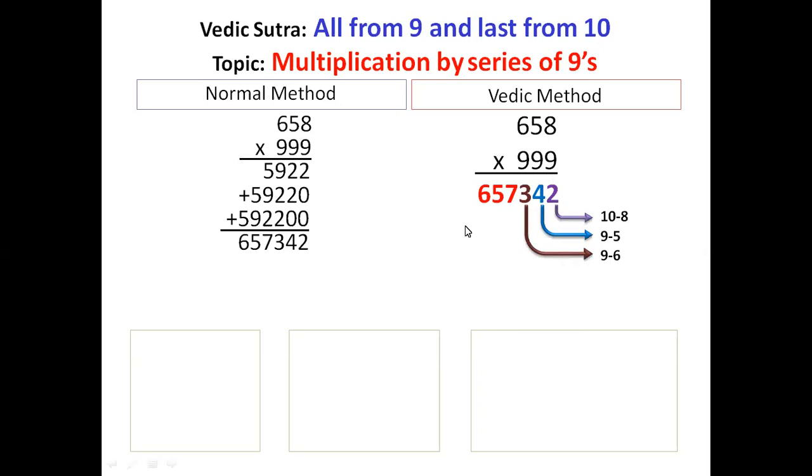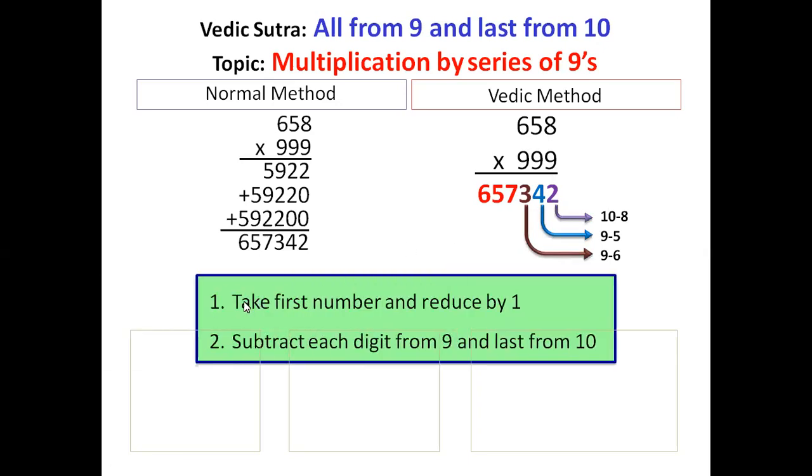Let's go through the steps. Take first number and reduce by 1. 658 minus 1 is 657. That is the first step.